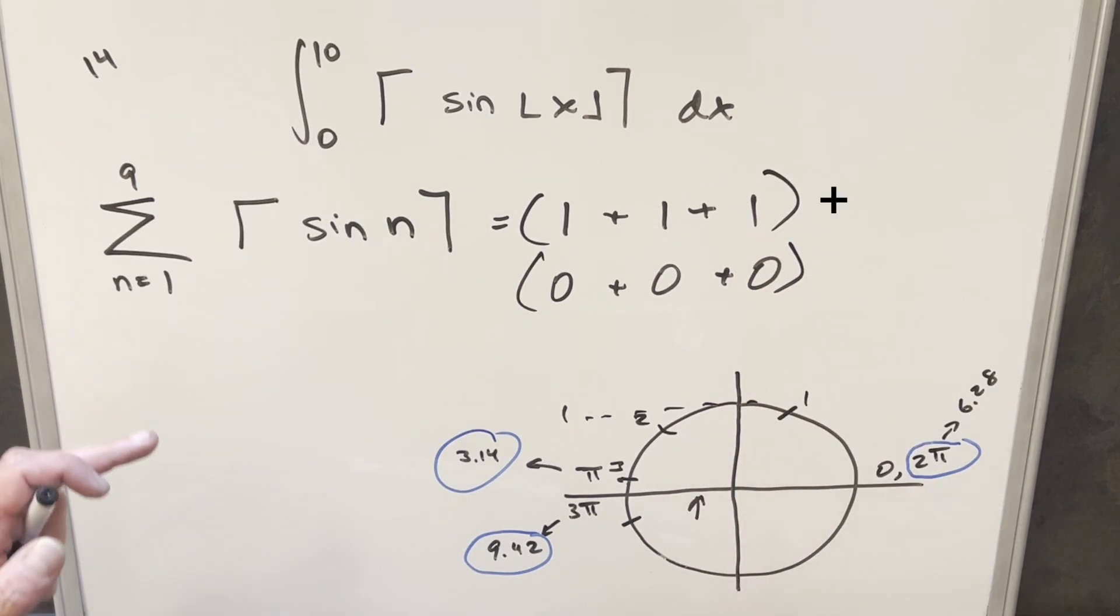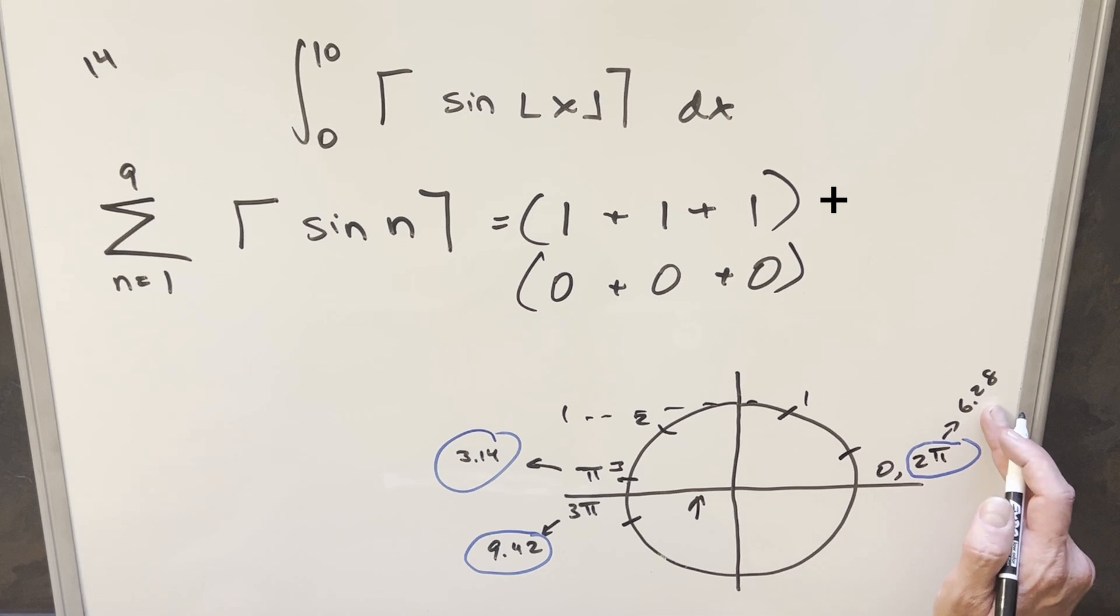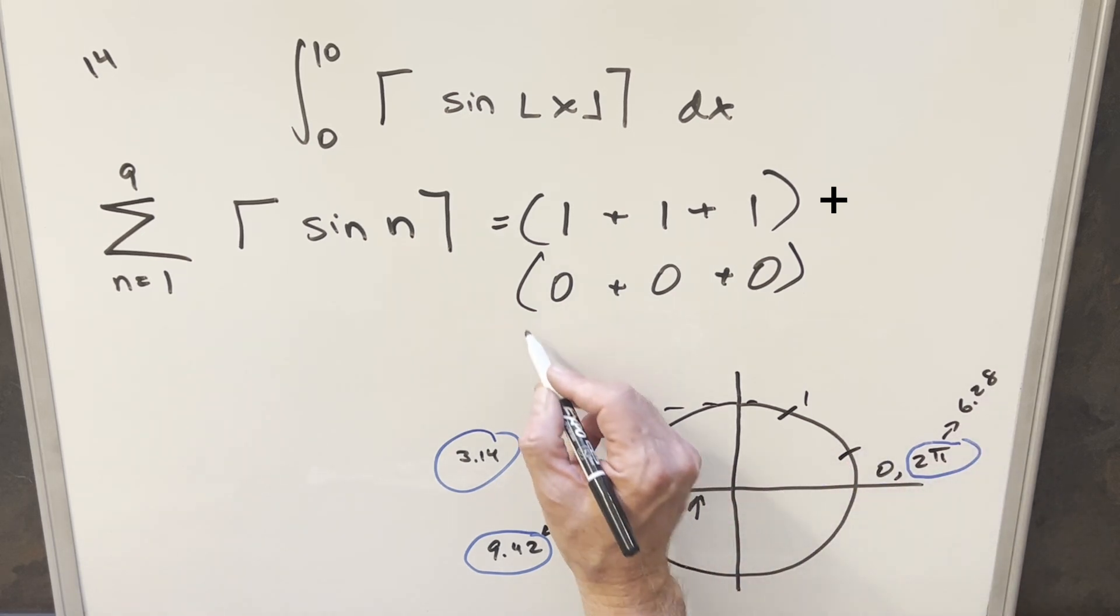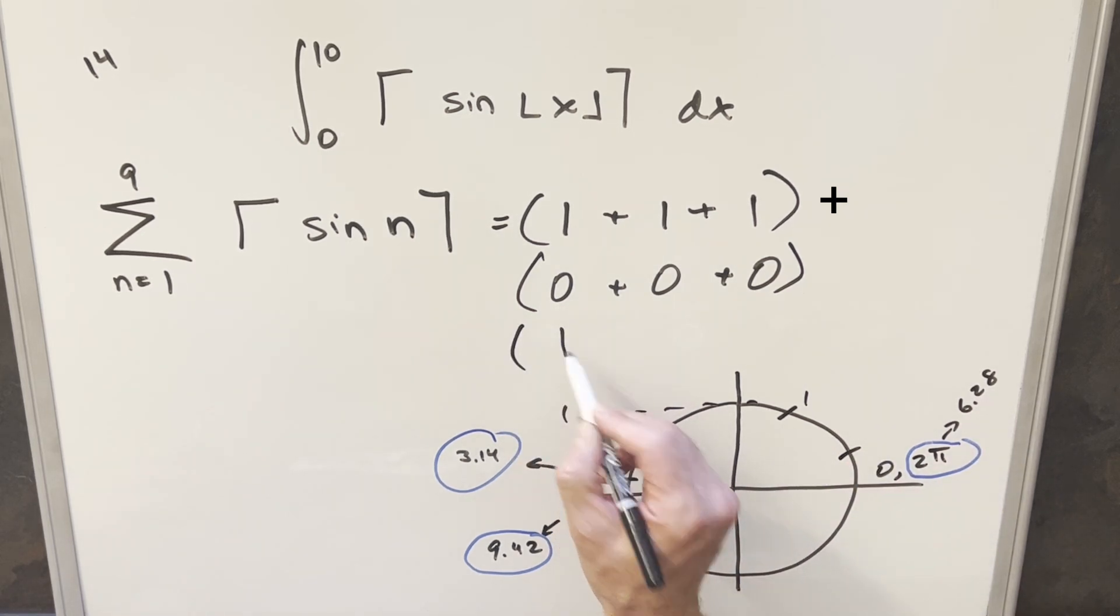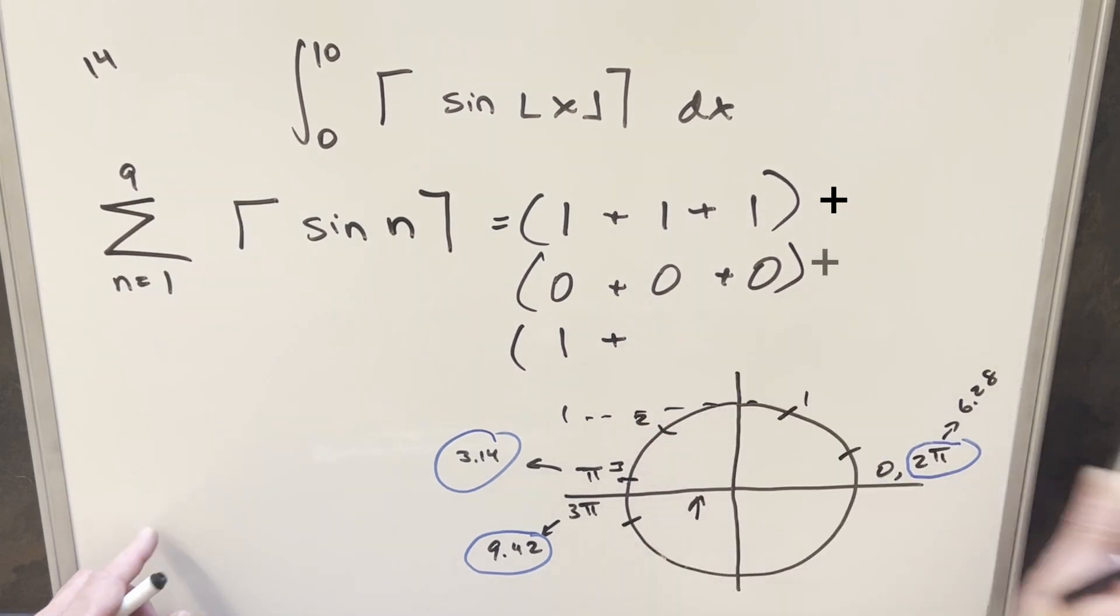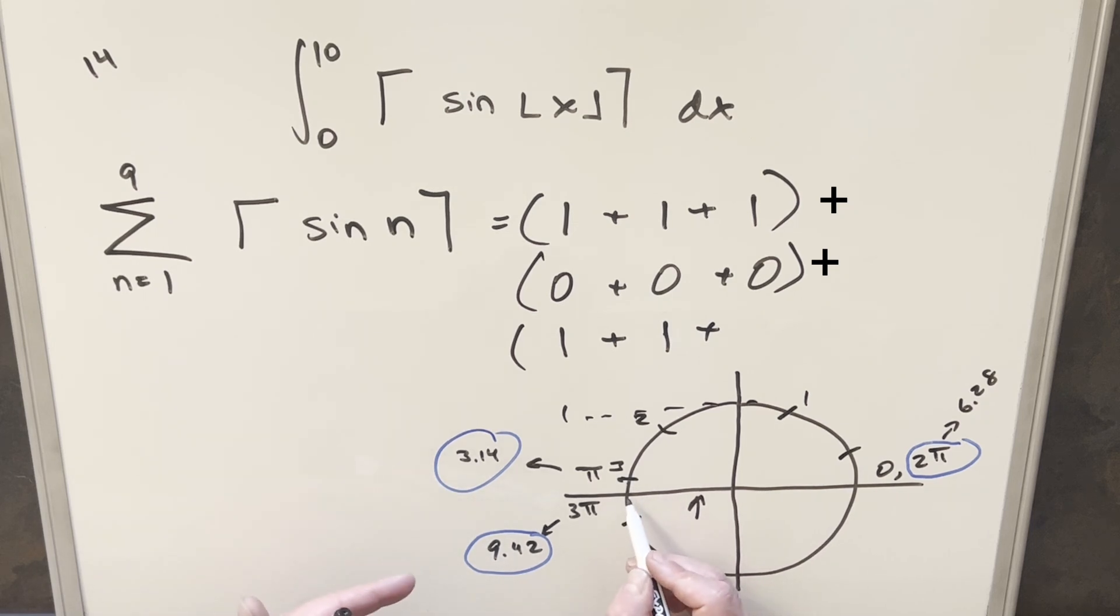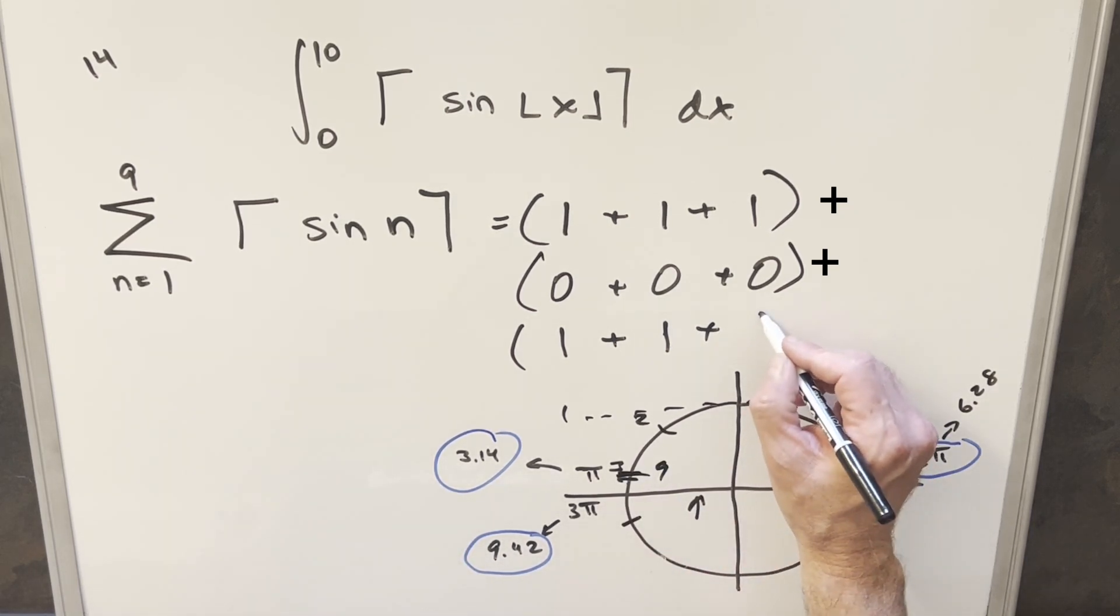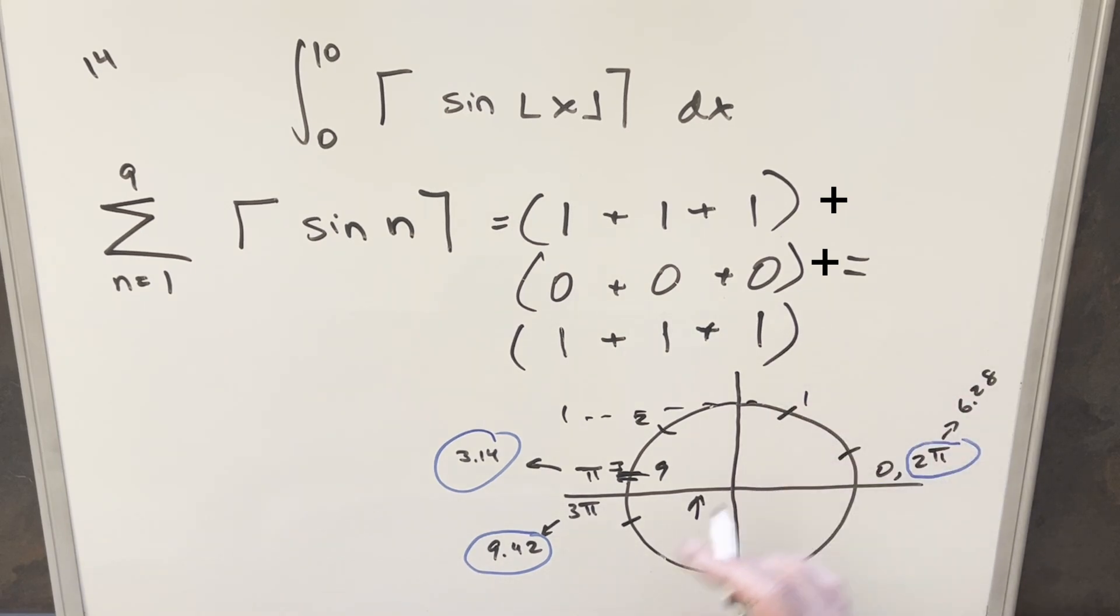So that's going to be our quadrants 3 and 4. And then we're back into quadrants 1 and 2 for our n equals 7 value. n equals 7 is going past 6.28. So it's going to be somewhere in here. So n equals 7 is going to be 1. n equals 8 is going to be 1. And then for n equals 9, that's going to be somewhere close to 3 pi, but it's going to be somewhere in here for our 9. That again is getting rounded up to 1. So all we need to do is just add everything up.